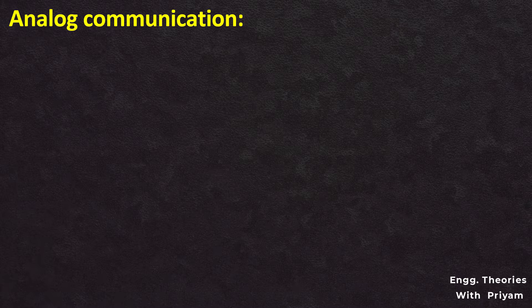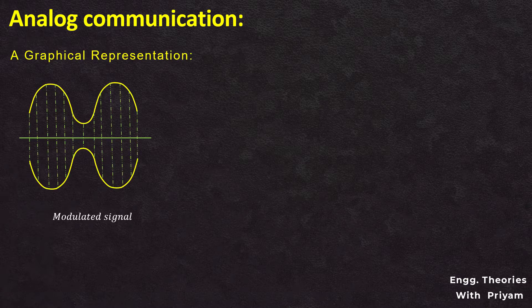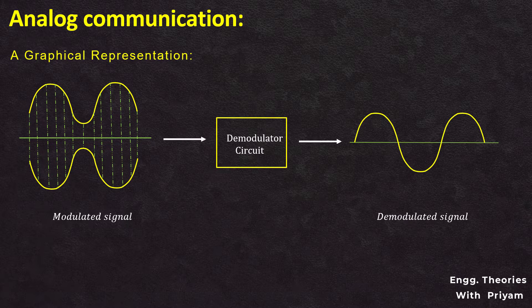In this lecture we will understand what is the demodulation of the amplitude modulated signal using a square law demodulator. The process of extracting the original information-carrying signal from a modulated carrier signal is known as demodulation. A demodulator is an electrical circuit primarily employed to extract the information content or message signal from the modulated carrier signal, providing an output that is either the original or a scaled version of the message signal.